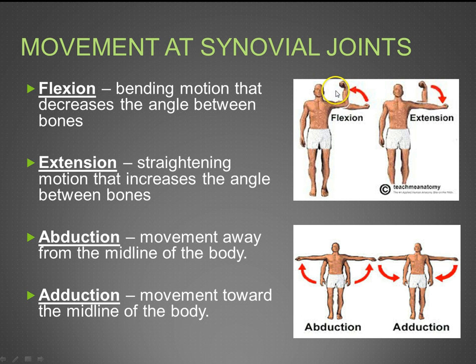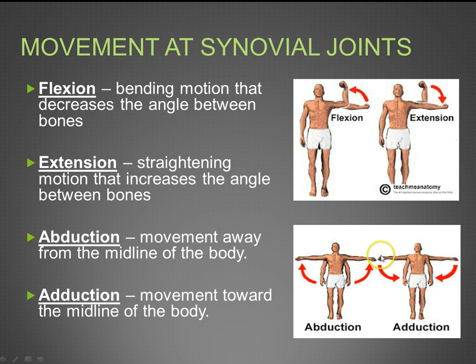Next is extension — releasing and relaxing your biceps, letting your arm go back down. That is called extension. Then we have abduction and adduction. Abduction is movement away from the midline of the body, while adduction is moving toward the midline of the body.